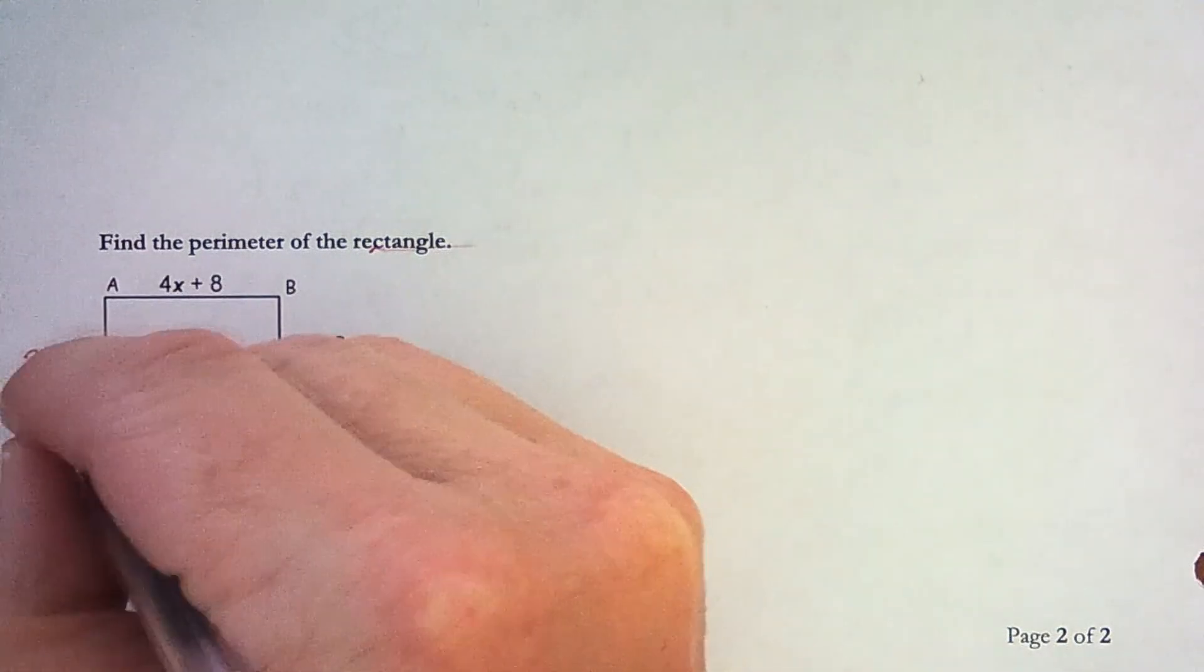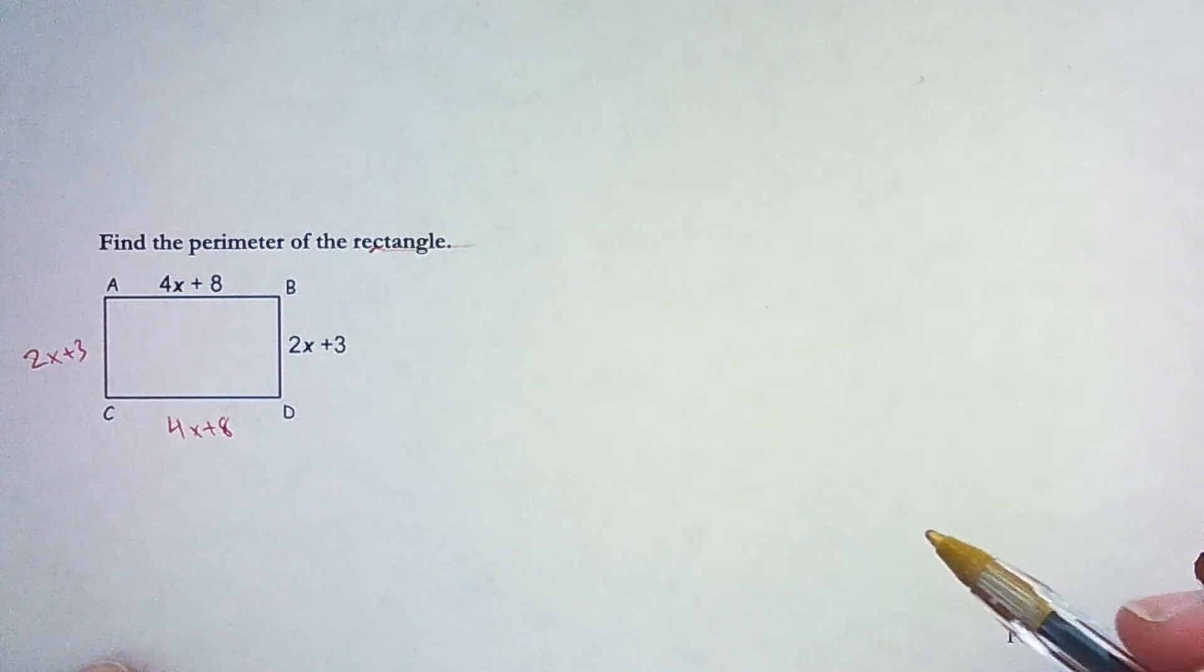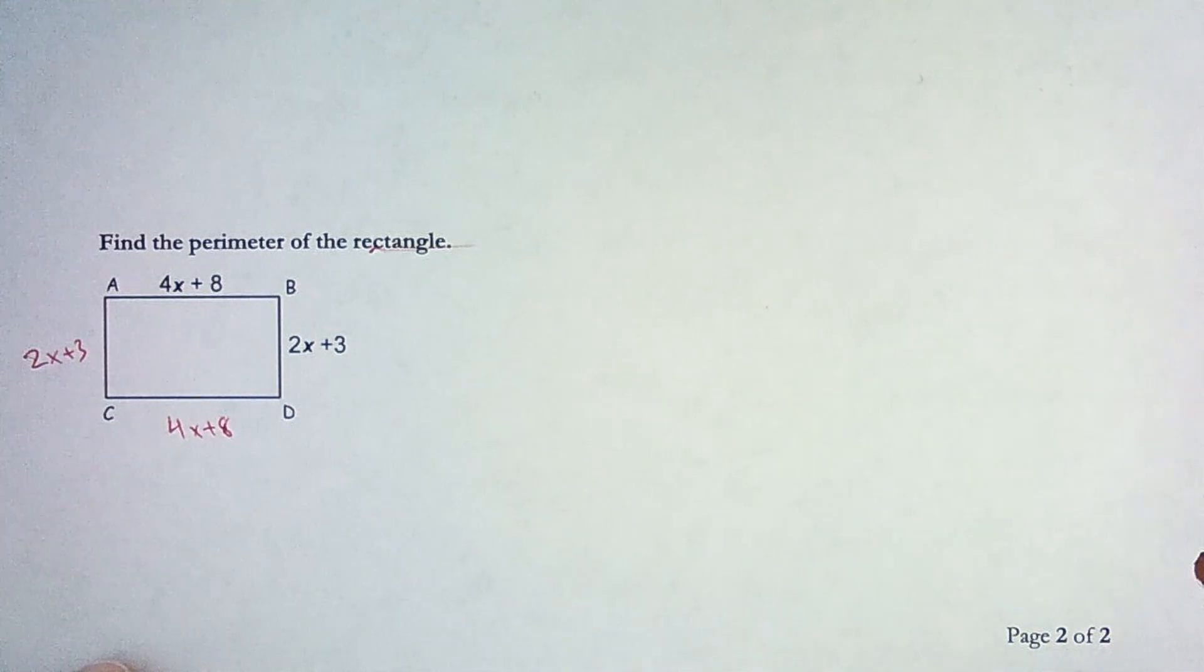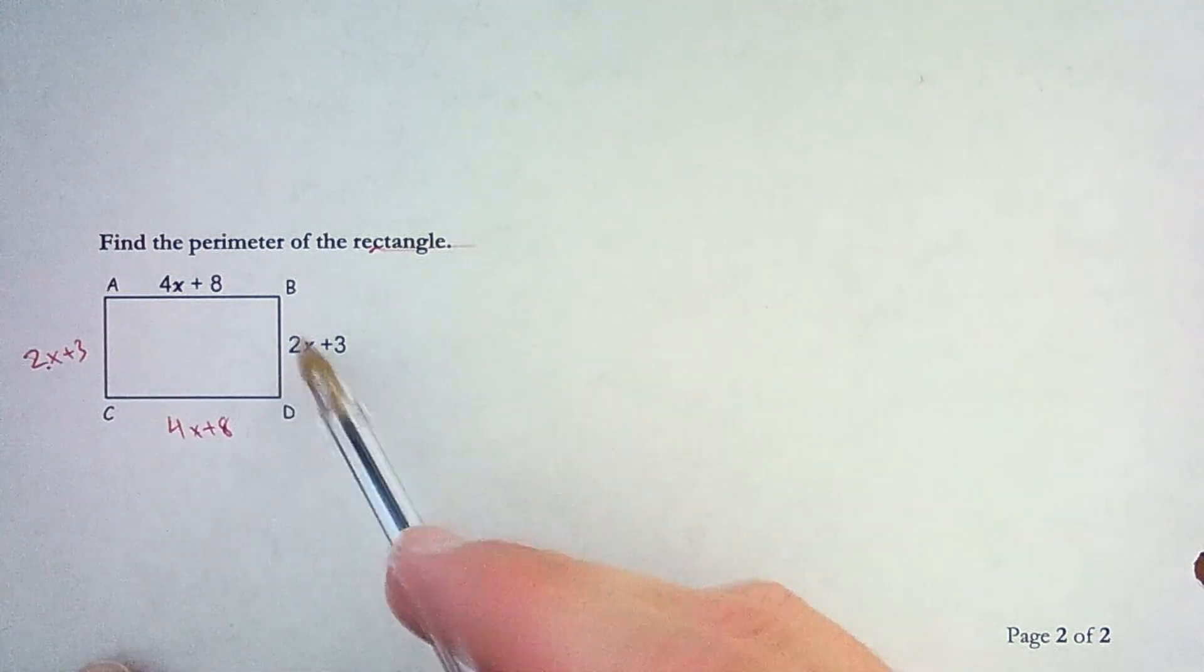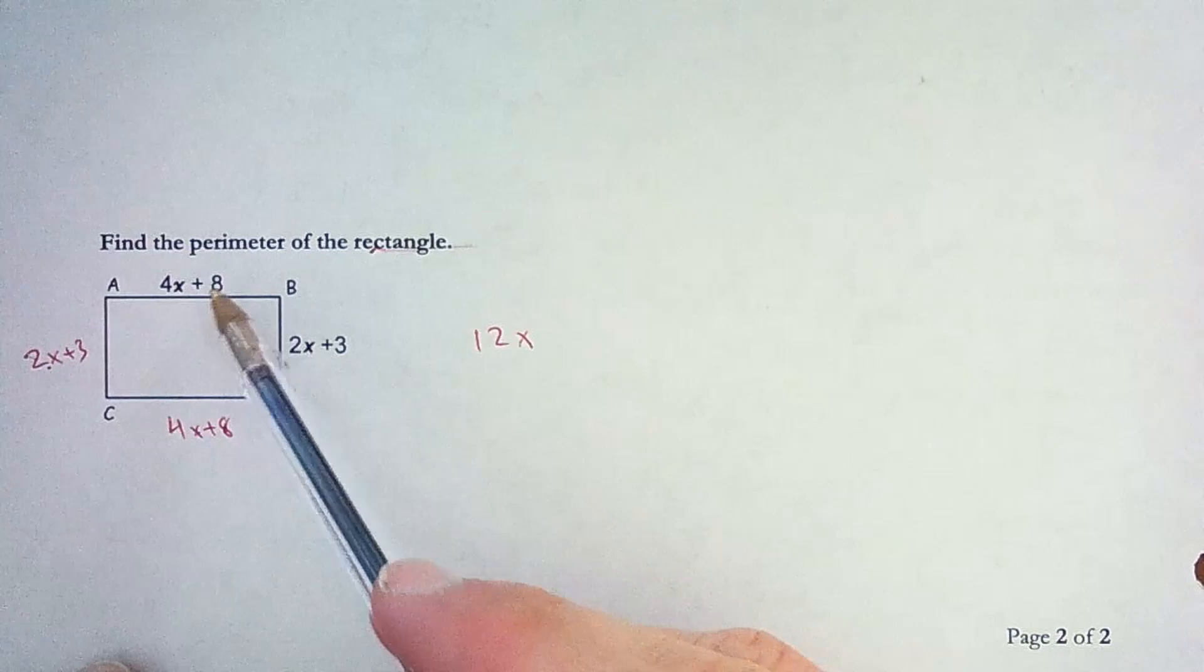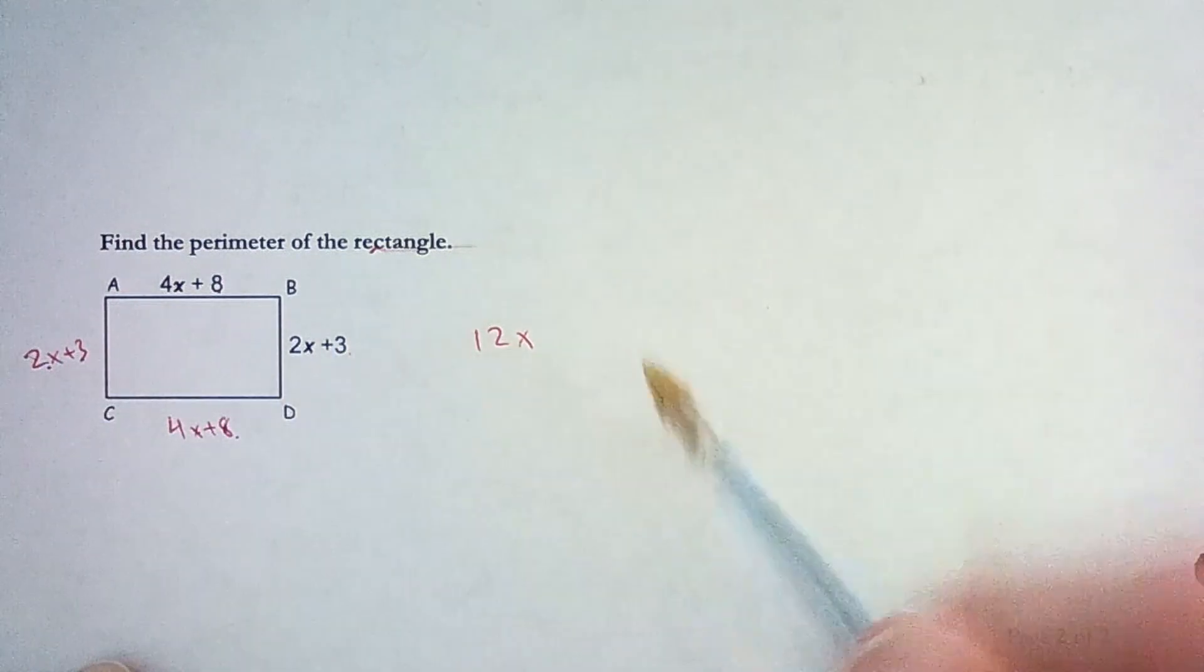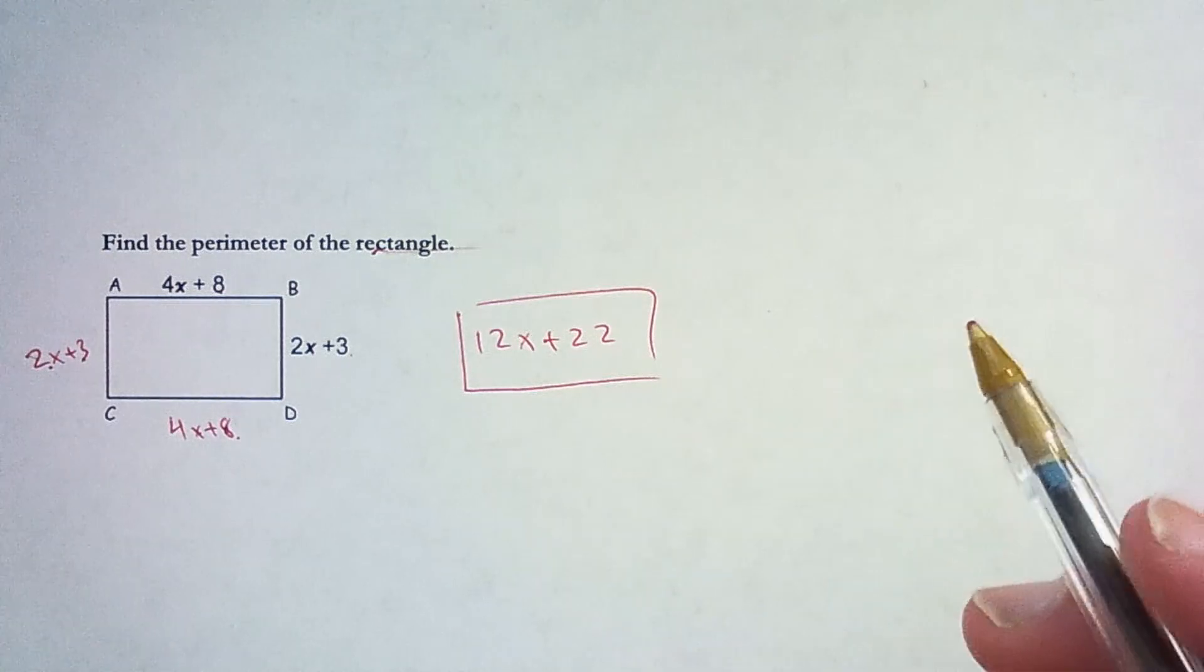That means 4x plus 8 also goes here. 2x plus 3 is here. That means over here is also 2x plus 3. And this is just a matter of adding all four of those expressions. So we'll combine like terms. So all the x's, 4x and 4x is 8x. Another two is 10x and another two is 12x. So 12x. And then we've got 8, 16, 19, 22. So 12x plus 22 is the perimeter of this rectangle.